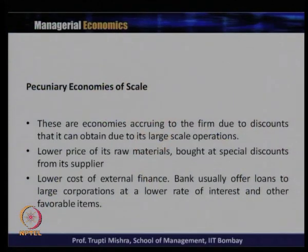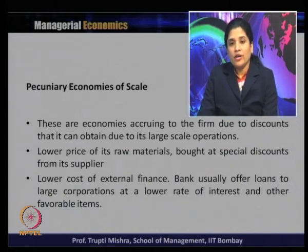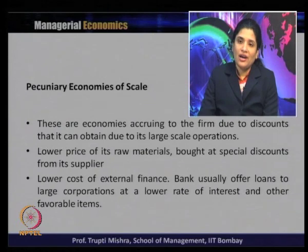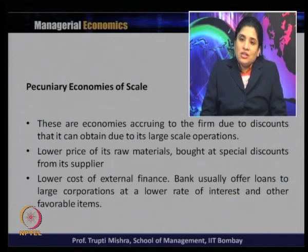Now we turn to pecuniary economies of scale, where there is a reduction in the price of raw materials or inputs, giving the firm a cost advantage. Pecuniary economies are economies occurring to the firm due to discounts it can obtain from large-scale operations. For example, raw materials bought in bulk receive a special discount from suppliers — large-scale firms buying in greater quantities pay a lower price per unit rather than individual-unit rates.